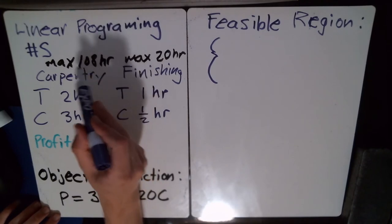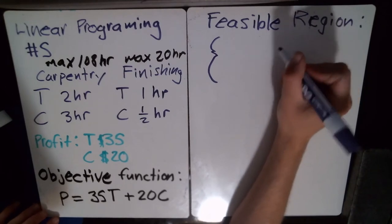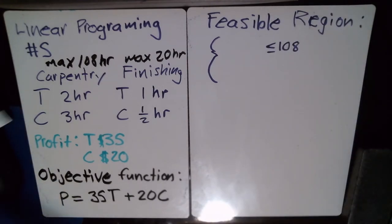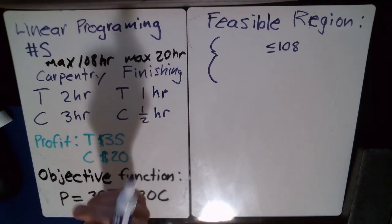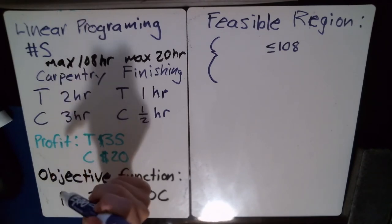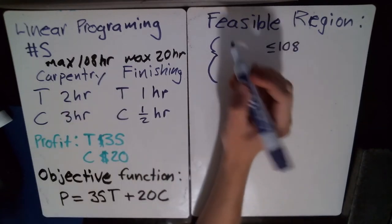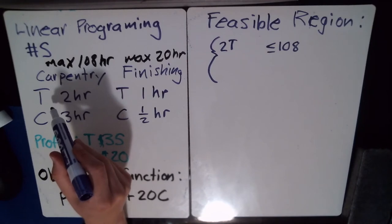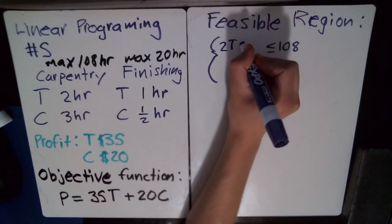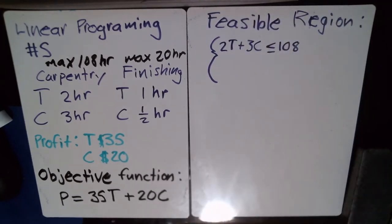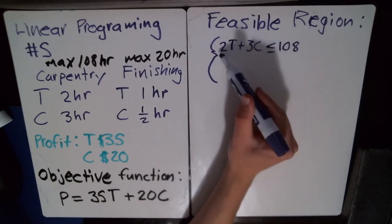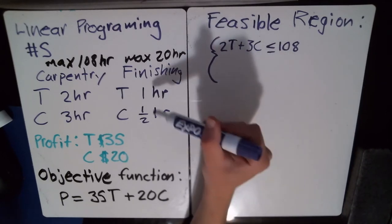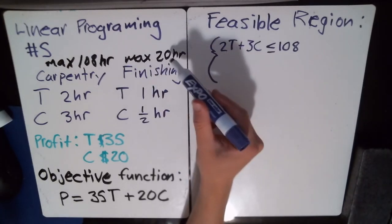Starting with carpentry: we know we can have a maximum of 108 hours, so the total carpentry time must be less than or equal to 108. Each table takes two hours and each chair takes three hours, giving us 2T + 3C ≤ 108. For finishing, the total time must be less than or equal to 20: each table takes one hour and each chair takes one half hour, giving 1T + 0.5C ≤ 20.